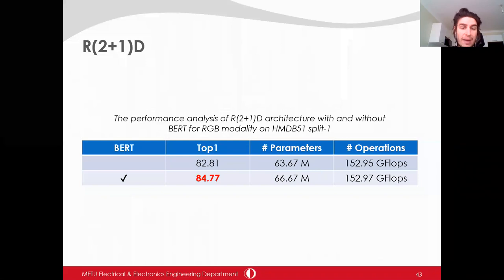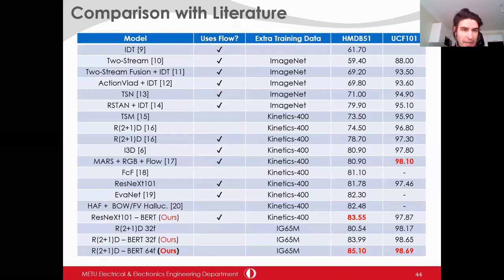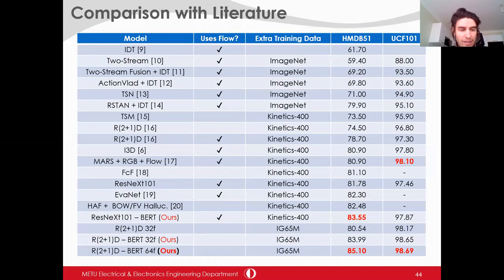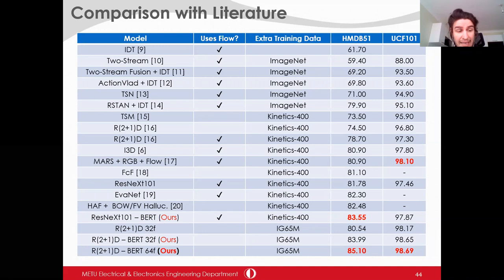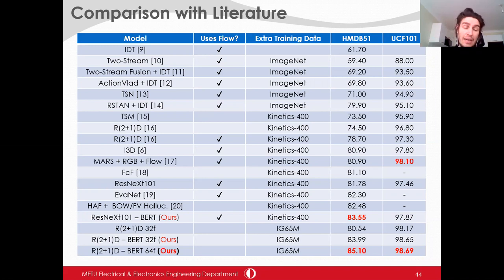For R2+1D architecture, BERT also increases performance by about 2 to 3 percent. The state-of-the-art results for both HMDB51 and UCF101 datasets show that our BERT implementations obtain the best result on HMDB51 for both Kinetics 400 and IG65M pre-training datasets. For UCF101, it is the best for IG65M pre-training but the second best for Kinetics 400 pre-training. This might be because UCF101 may contain action samples requiring less temporal reasoning than HMDB51 samples.